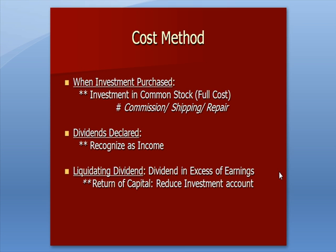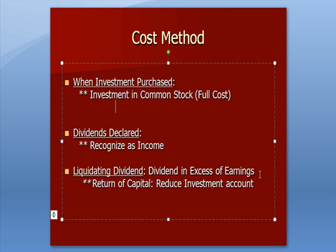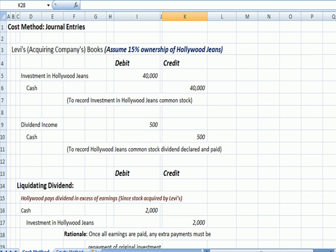So let's talk about the cost method. When we purchase the investment, just like any other asset, we record an asset by debiting investment in common stock for the full cost of that stock. When the issuer declares a dividend, we recognize income on that dividend, just like any other investment. But then we have a liquidating dividend — that is when a company pays a dividend in excess of earnings. Dividends are paid out of available earnings, and if we pay a dividend more than our earnings, we're actually returning capital to investors. When we return capital, we reduce the investment account.